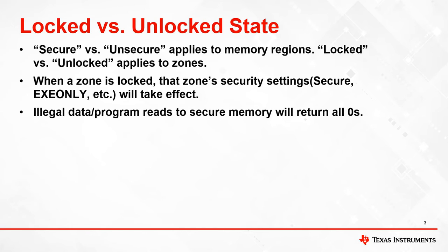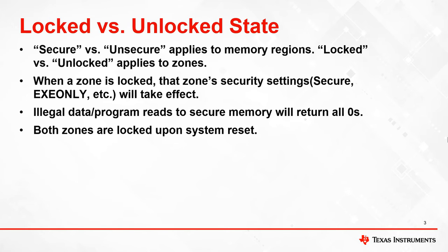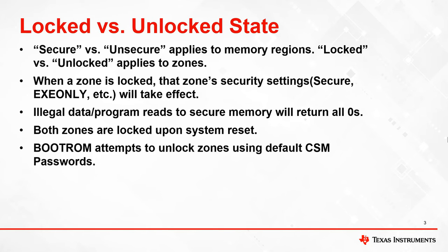Any unauthorized read to a memory region secured by that zone will return all zeros. You can test this in the CCS memory browser when a zone is in the locked state. On a device reset, all memory regions except boot ROM and OTP are inaccessible until security initialization is performed by the boot ROM. Once initialized, both zones will be in a locked state until unlocked by the boot ROM or by the user. The boot ROM will attempt to unlock the device using the default CSM passwords, so any user who wishes to use the DCSM module must program their own unique passwords in the zone select block to prevent their zone from being unlocked on device reset.